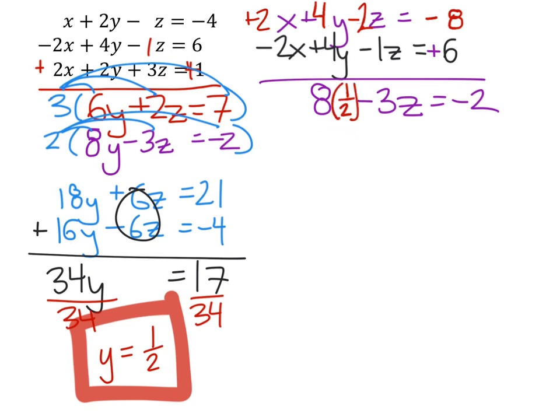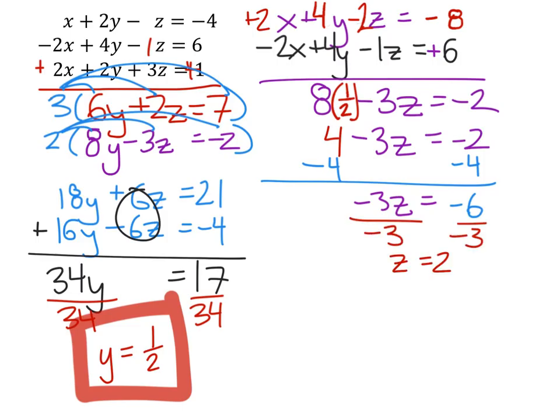I've gone ahead and replaced it. Then I'll multiply 8 and one-half. From here I'm just solving for z. I'll need to subtract 4 from both sides, and that gives me negative 3z equals negative 6. Then I'll divide by negative 3 on both sides and get my answer. We find that z equals 2.